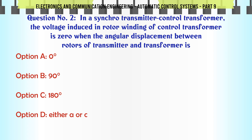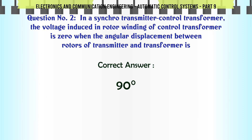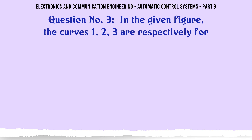In a synchro transmitter-control transformer, the voltage induced in the rotor winding of the control transformer is zero when the angular displacement between rotors of transmitter and transformer is: A. Zero, B. Ninety, C. One hundred and eighty, D. Either A or C. The correct answer is: Ninety.